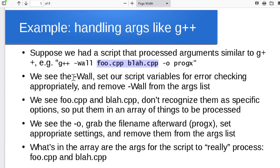Our script would see dash-Wall, recognize it as the error-checking setting, turn that on, and remove it from the arguments list. Then we see foo.cpp and blah.cpp — we don't recognize those as command options, so we assume they are data values and put them in our array for later. We see dash-o, recognize it, and know that a file name should come next, so we grab it and set that as our output file instead of a.out. At the end, what's left in the array are foo.cpp and blah.cpp.